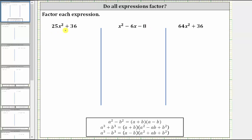The first expression is 25x squared plus 36. Remember, the first step in factoring is always to factor out the greatest common factor. But here, the only common factor between 25x squared and 36 is one. And therefore, we move on to another strategy.